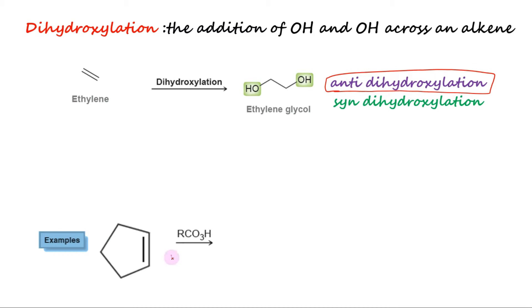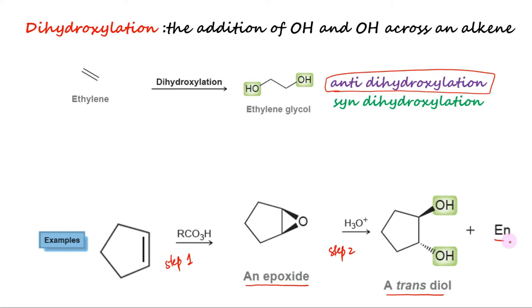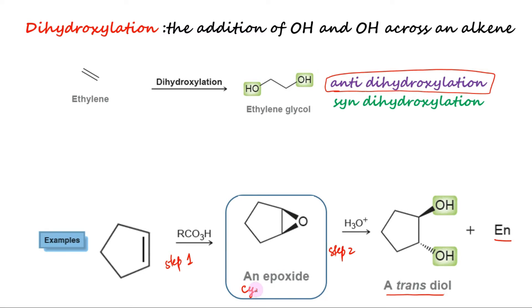The first step of the process involves conversion of the alkene into an epoxide. The second step involves opening the epoxide to form a transdiol. An epoxide is a three-membered cyclic ether. In the first part of the process, a peroxyacid, RCO3H, reacts with the alkene to form an epoxide.